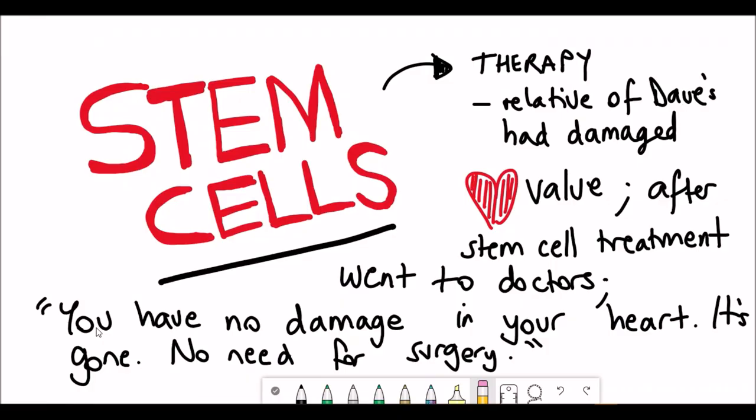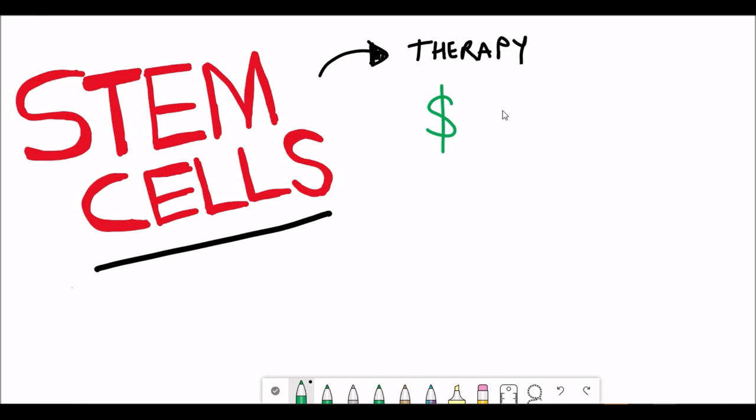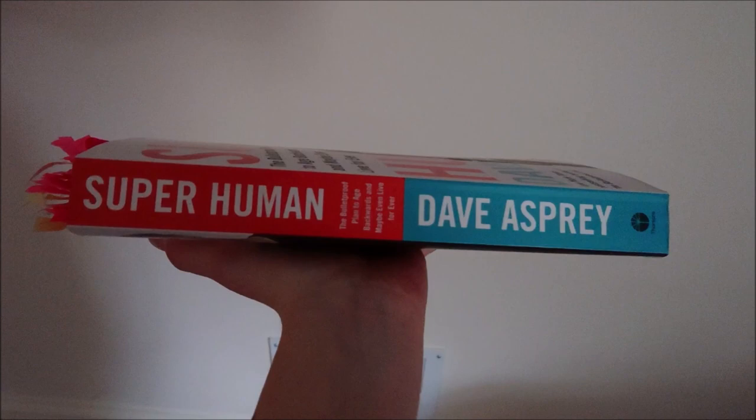What alternatives can you do to boost your stem cells? One piece of evidence that Dave gives in the book is that rats that were fasted for 24 hours showed increased stem cell regenerative ability.